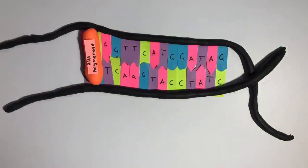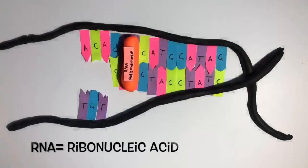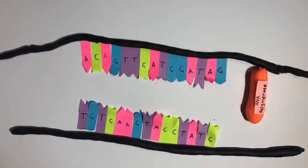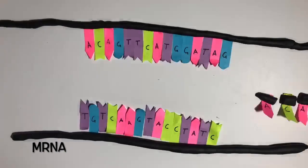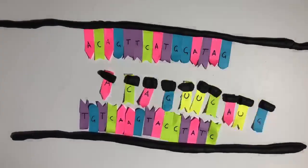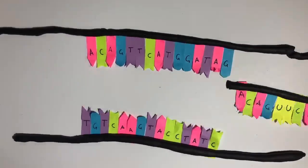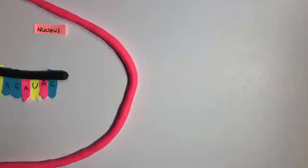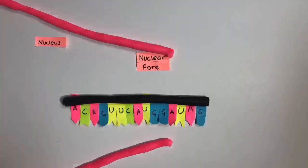Transcription is the process where the DNA gets unravelled by an enzyme called RNA polymerase. This allows the messenger RNA to successfully add the anticodons complementary to one side of the DNA. The mRNA then takes the information from the DNA and leaves the nucleus through a pore, going into the cytoplasm where translation can take place.